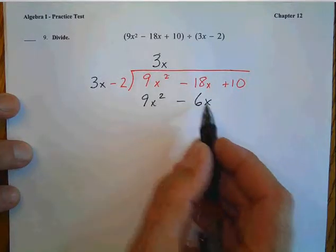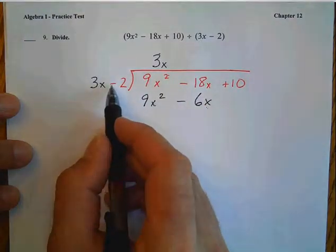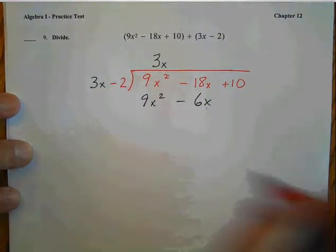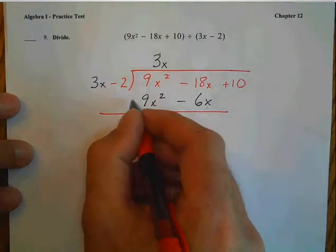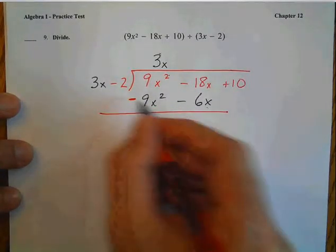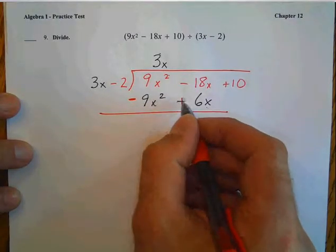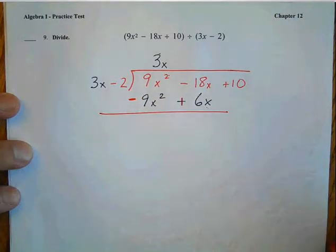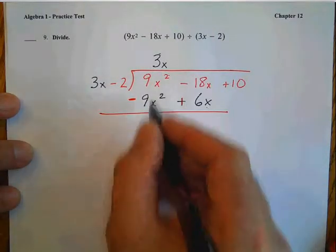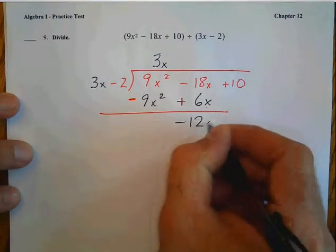That's 9x squared minus 6x. The 6x comes from 3x times minus 2. We're now going to subtract each part, so that becomes a minus. And this, because it used to be a minus, now becomes a plus.